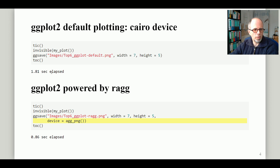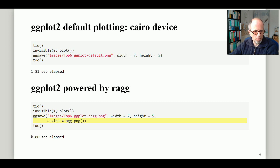You can see the difference in the timings. I'm using the tictok package for the timings here. In the first case, using the default Cairo device, the code takes 1.81 seconds to execute. In the second case it's more than twice as fast — 0.86 seconds — just by changing the device. That goes to show that the ragg device can be a game changer in terms of execution time.